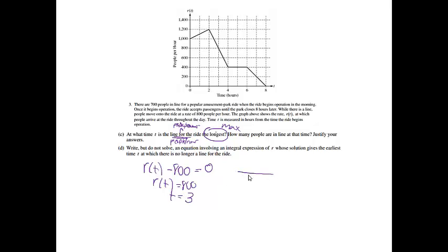Just from looking at what we did before, since r of t minus 800 is going from positive to negative, I could verify that that is a maximum. So I would say the line is longest at t equals 3, and that would be because r of t minus 800 changes from positive to negative. Then it says how many people are in the line at that time.